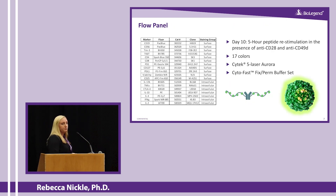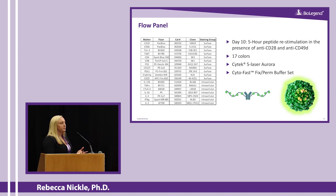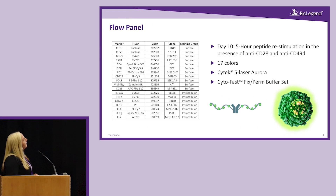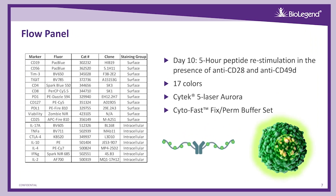Before we get into the results, I'd like to go over what we used as our flow panel and make you familiar with the LegendPlex workflow. The flow panel was a 17-color panel analyzed on the five-laser Cytec Aurora spectral cytometer. We used both surface markers as well as intracellular markers, utilizing our Cytofast fixed perm buffer set to catalyze that staining.